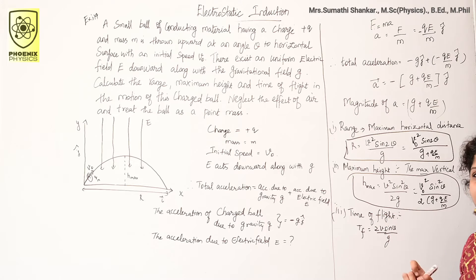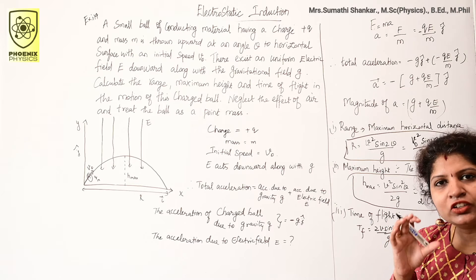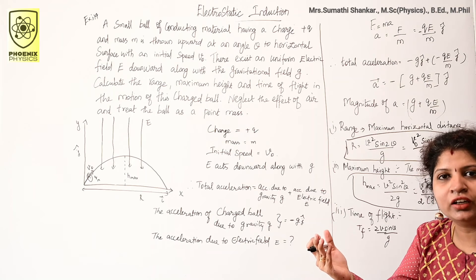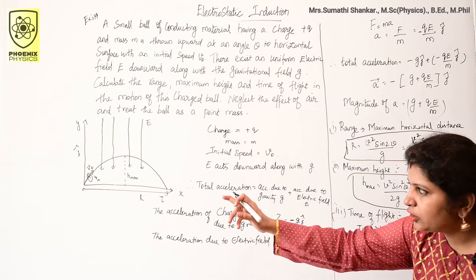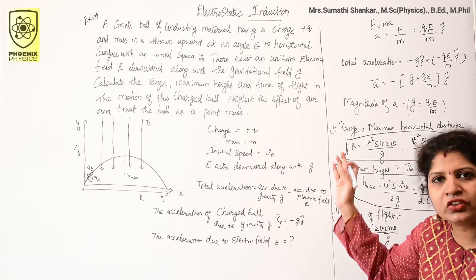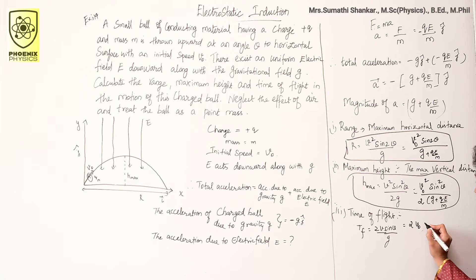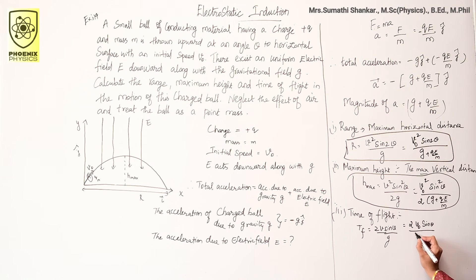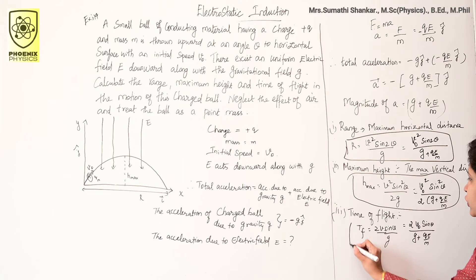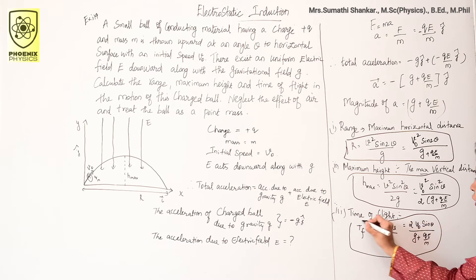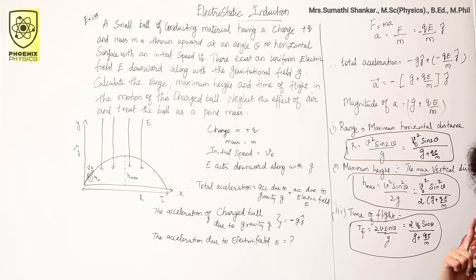Finally, time of flight. Time of flight is the time taken by the projectile from the point of projection until it hits the ground. The formula is T_f = 2v sinθ / g. Substituting v₀ for v and (g + qE/m) for g, we get: T_f = 2v₀ sinθ / (g + qE/m).